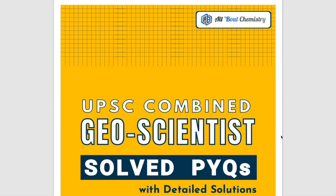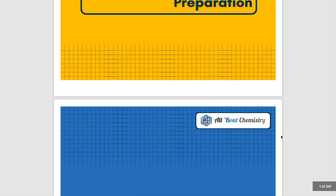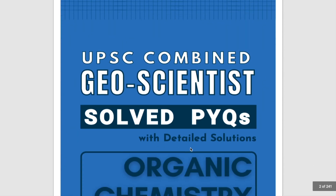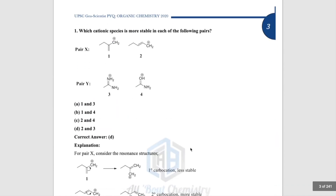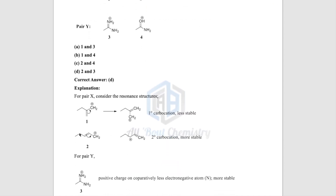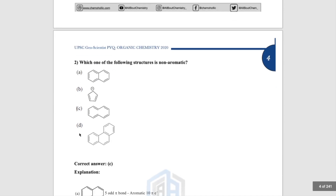Let me show you how this ebook looks. Once you download it, this is the front page — it says 'UPSC Combined Geoscientist: Solved Previous Years Questions with Detailed Solutions,' and as it suggests, it is ideal for UPSC GSI pre-exam preparation. We start with organic chemistry questions. Each question has the correct answer followed by a detailed explanation of why that answer is correct.